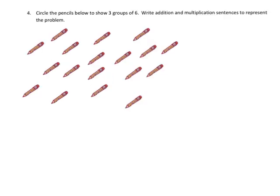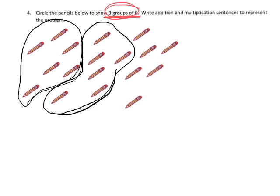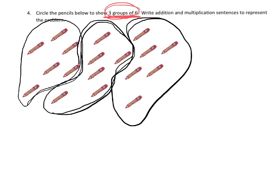The last problem says: circle the pencils below to show three groups of six. This is pretty straightforward and we'll all agree regardless of what country we're from. Here is one group of six: 1, 2, 3, 4, 5, 6. Here's another group of six: 1, 2, 3, 4, 5, 6. And then lastly here's our final group of six. It says write an addition problem, so that's going to be six plus six plus six, and that's 18.